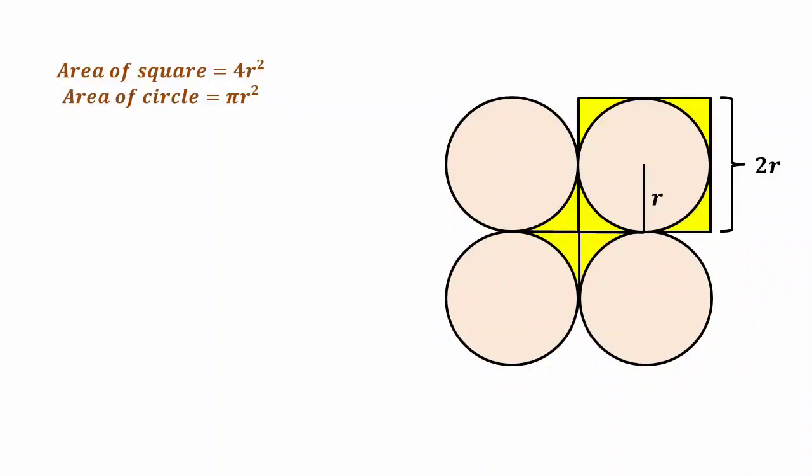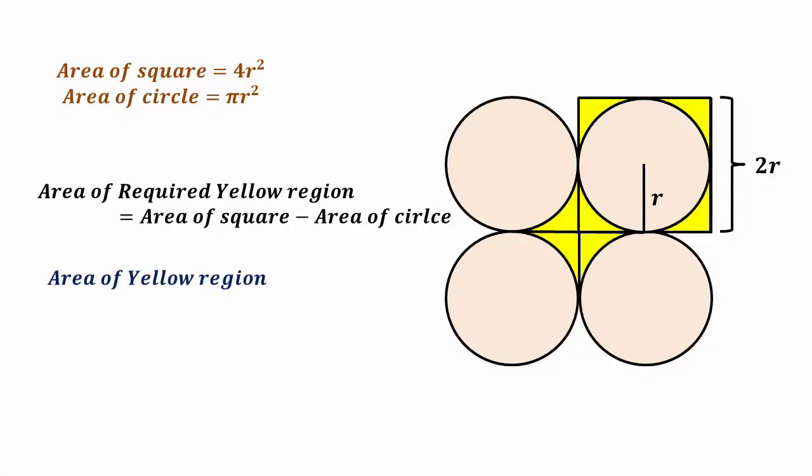Now, area of the required yellow region equals area of the square minus area of the circle, which is 4r² - πr².